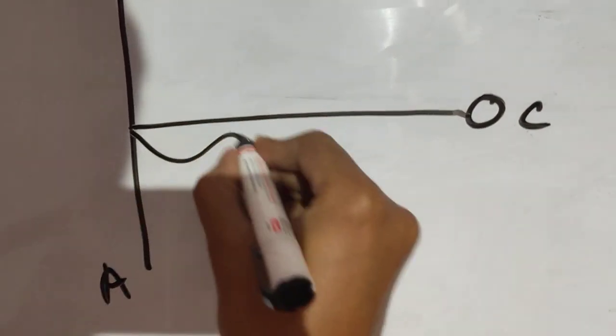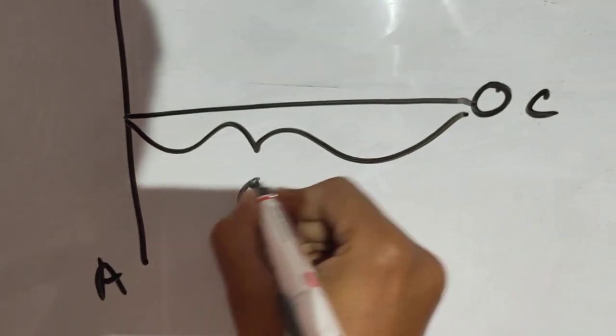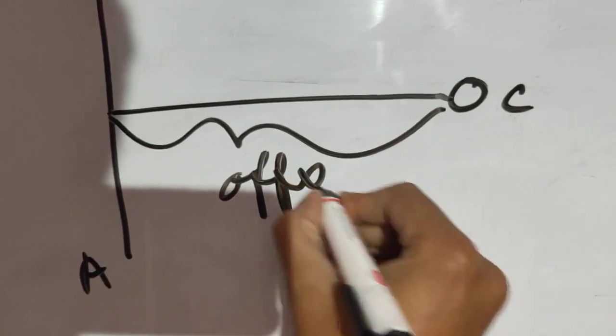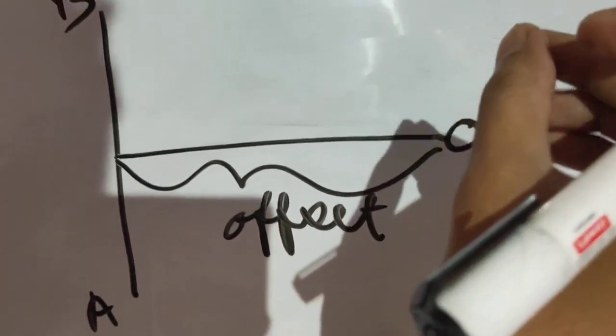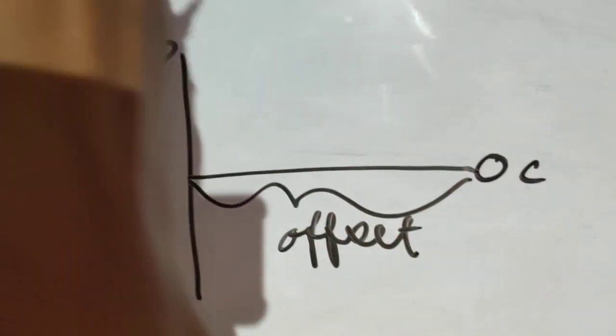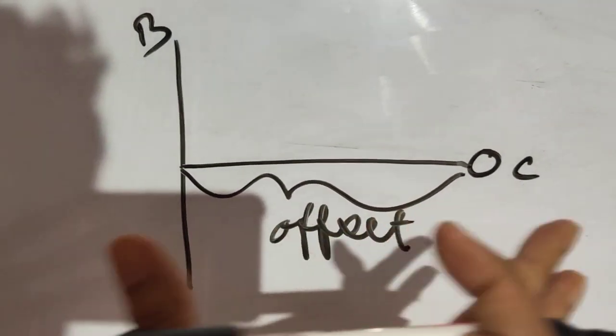And this particular distance can be called offset. The lateral measurement of this particular object to this chain line is called offset.